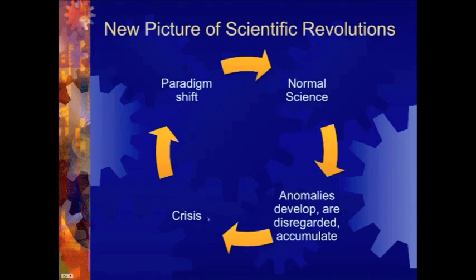The crisis sticks around for however long it takes for a new paradigm to come up. Once that happens, the paradigm shift occurs, and that process can take years or even decades. Once the paradigm shift is complete and all the practicing scientists in a field accept the new paradigm, you go back into a state of normal science. This is hence the structure of scientific revolutions — it goes around in a cycle like this.